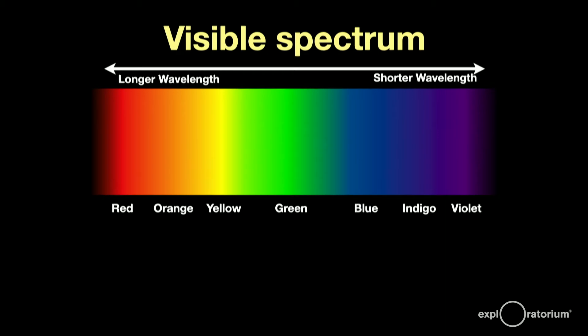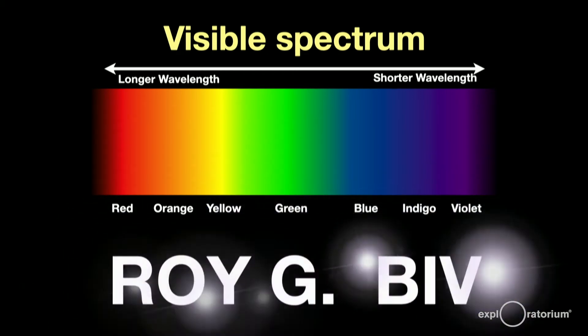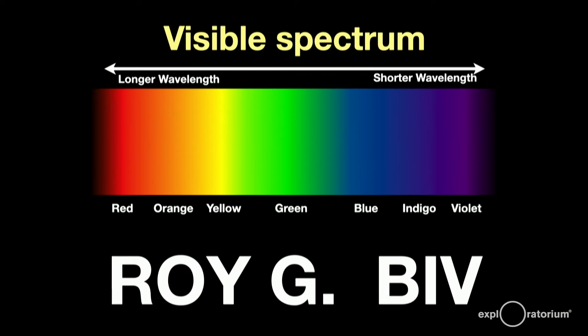The easy way to remember the colors in order is to remember the name ROYGBIV, an acronym for the colors. Indigo is thrown in there because we needed the vowel, otherwise it would just be ROYGBV.